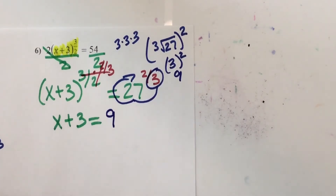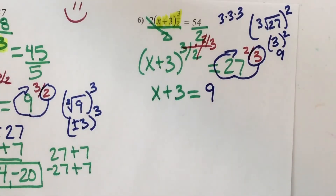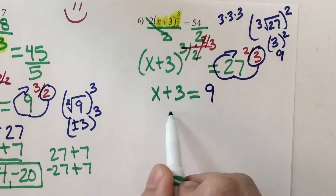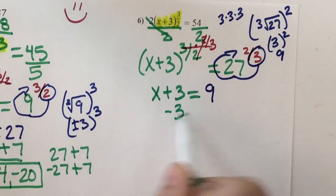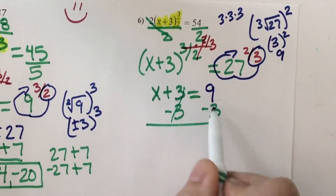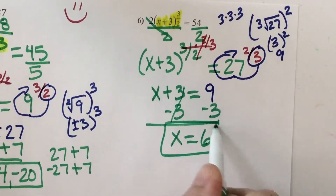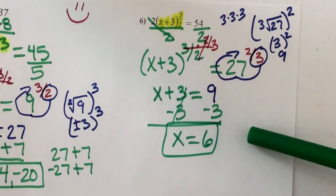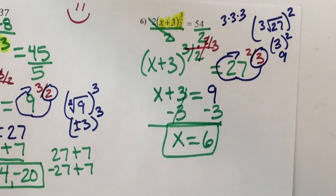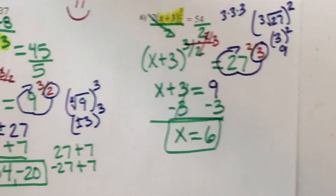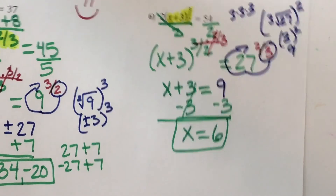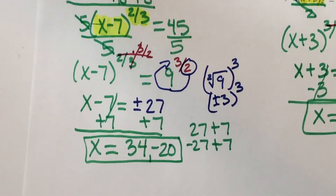So this is a 9. To get x by itself, how do I get rid of addition of 3? I subtract it. So 9 minus 3 makes 6. I only have one answer when I take an odd root. I have two answers when I take an even root, because when you take an even root, there's a plus or minus.